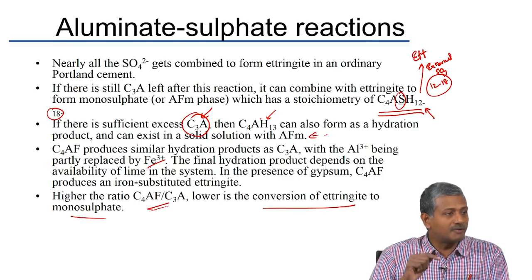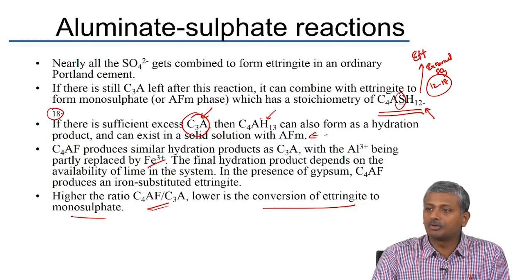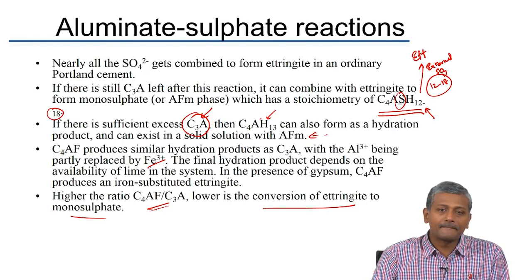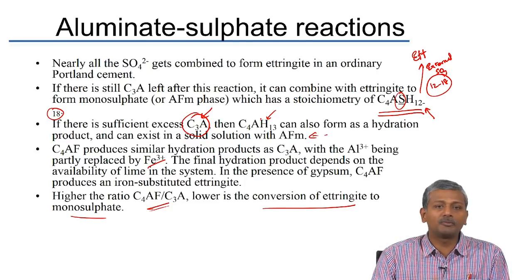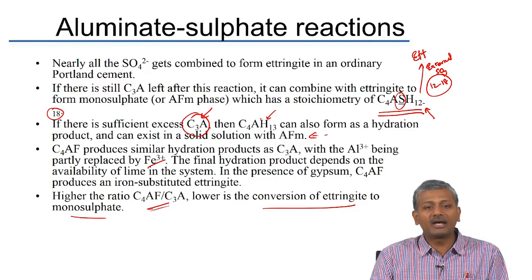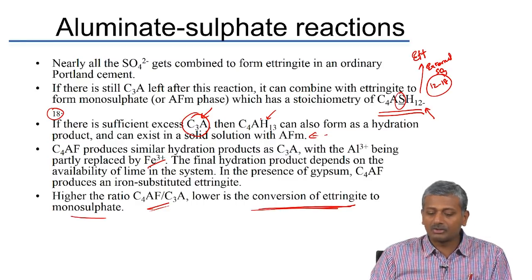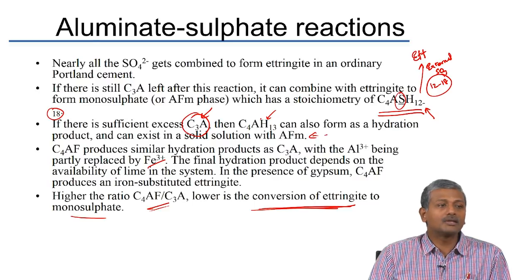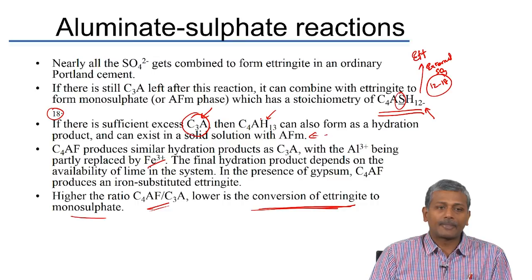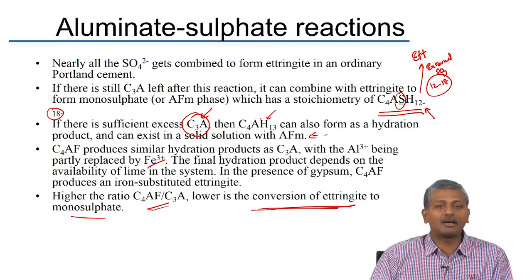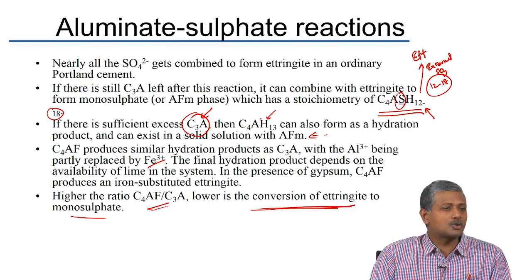For sulphate resistant cements, the C3A content is kept very low at 0–4% per standards. With very little C3A, there will be very little monosulphate. It is possible that ettringite remains a stable phase at the end of hydration. There would not be excess monosulphate available to react with external sulphates and reform ettringite in hardened paste. So in sulphate resistant cement, there is very little conversion of ettringite to monosulphate. This is the primary premise of sulphate resistance, though it solves only part of the problem.